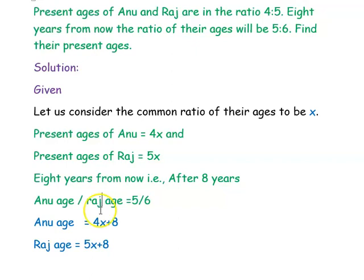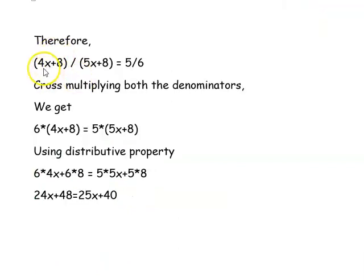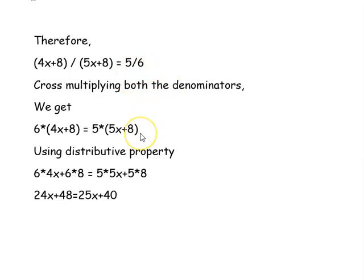Eight years from now, Anu's age will be 4x + 8 and Raj's age will be 5x + 8. Writing the equation: (4x + 8)/(5x + 8) = 5/6. Cross-multiplying the denominators to make it a linear equation: 6 × (4x + 8) = 5 × (5x + 8).